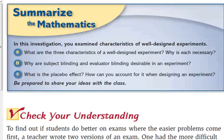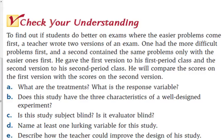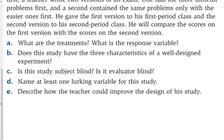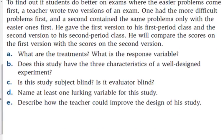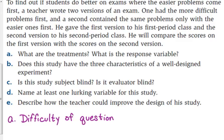Okay, so let's just take a second. What are the treatments in this teacher's experiment? The different versions of the exam—easier questions first, more difficult problems first. What is the response variable? The scores. So treatments are the difficulty of questions at the beginning of the test, and the scores are the response variable.